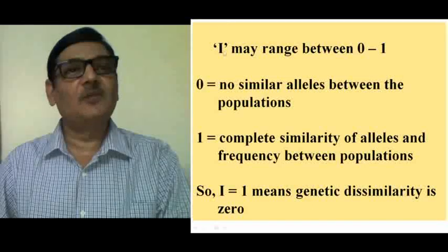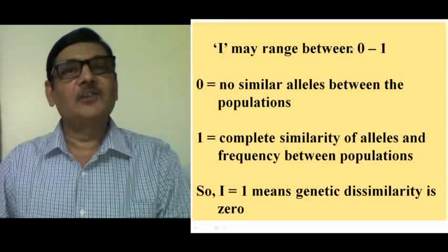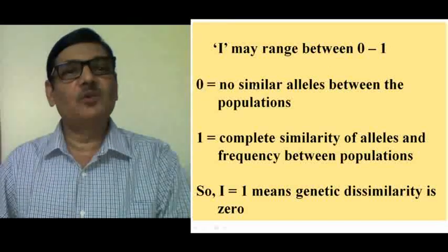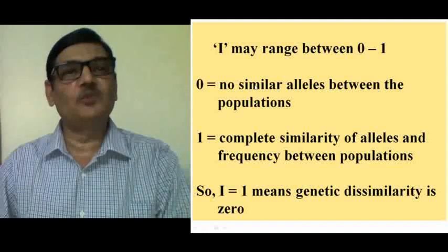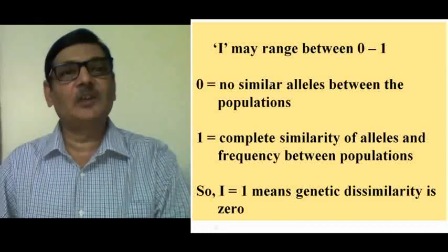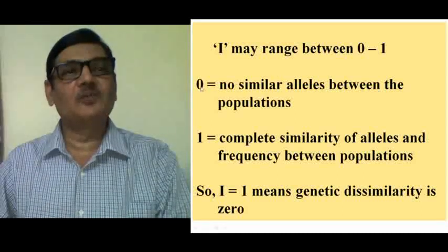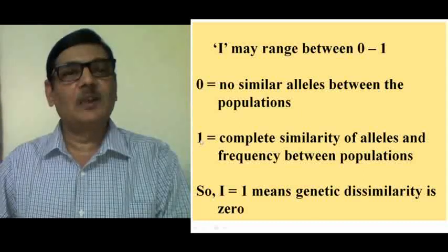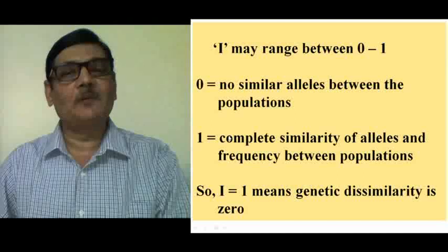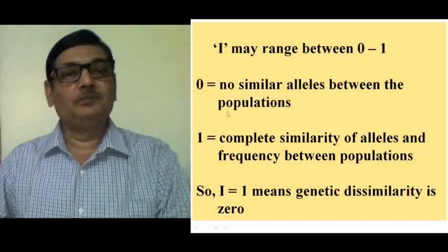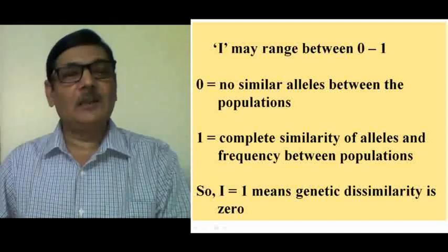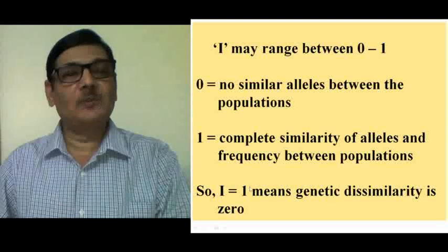This genetic identity i-value may range from 0 to 1. If this value is 0, it means there is no similar allele between the two populations — they are totally different from each other, even at the allele level. If the value comes to 1, it means there is complete similarity in the type of alleles and also their frequency between the two populations, indicating that genetic dissimilarity is 0.